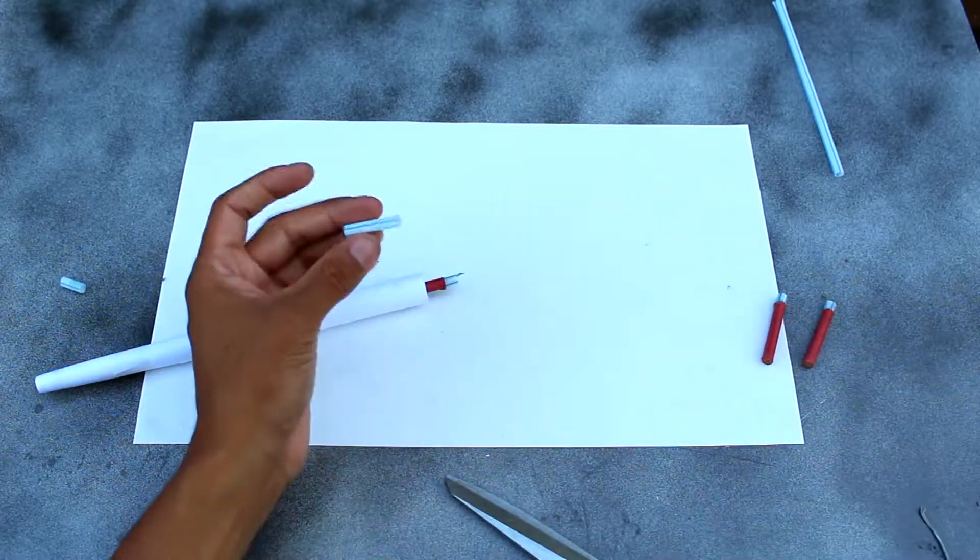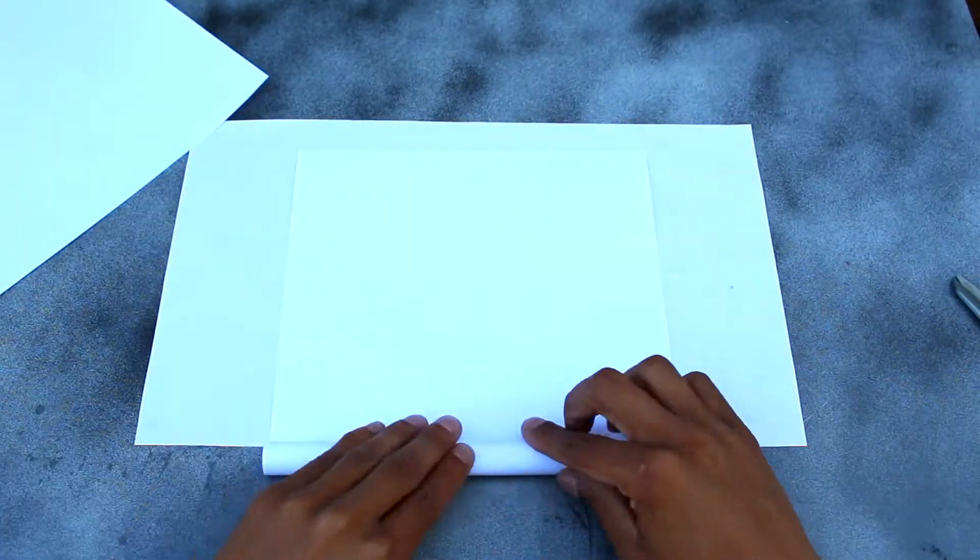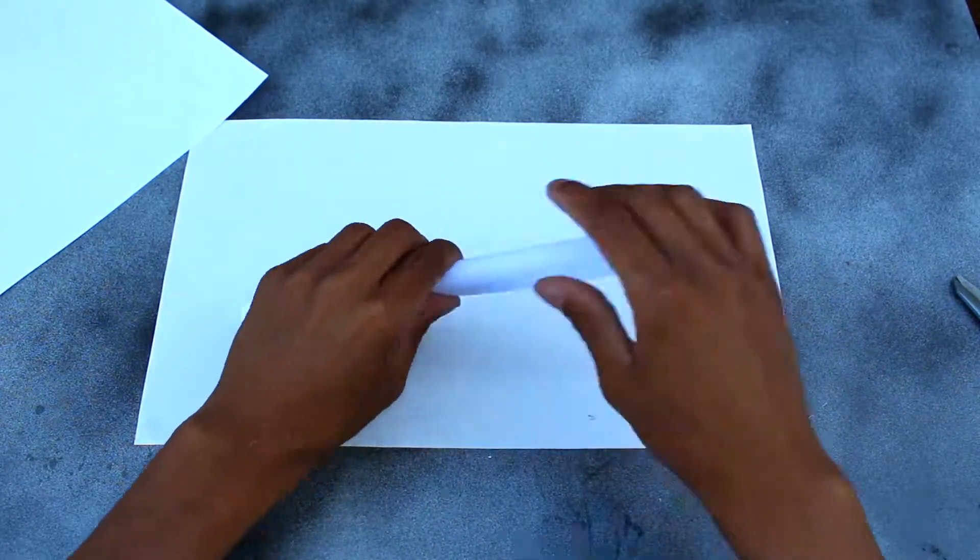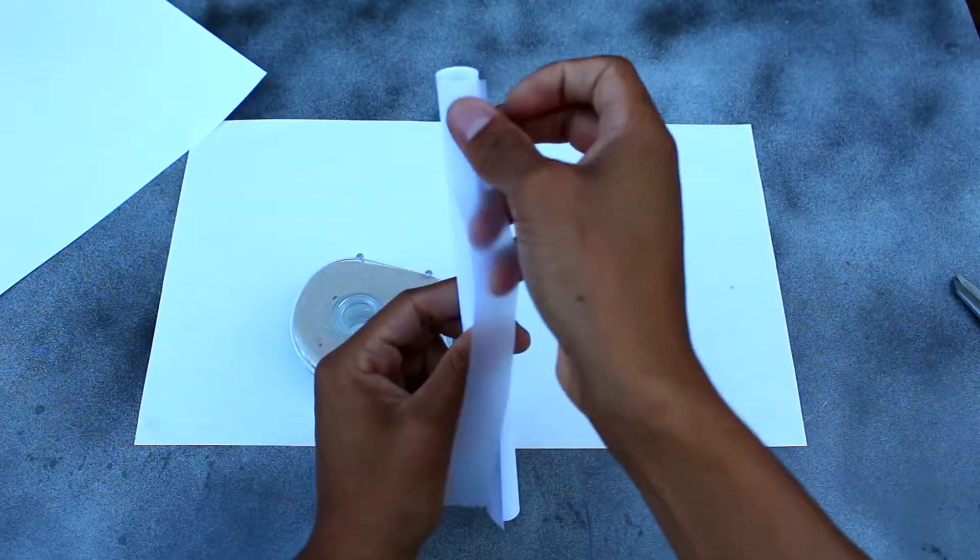And here I fill up a piece of a straw with glue to make it heavy. This will be our projectile. Now I'm going to roll one last piece up. I'm going to use this to build the handle.